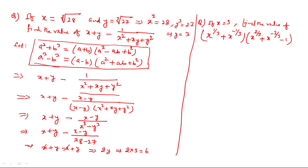By careful observation, x to the power 1/3 plus x to the power minus 1/3 is of the form a plus b. Then x to the power 2/3 indicates that x to the power 1/3 has been squared, and x to the power minus 2/3 indicates x to the power minus 1/3 has been squared. So this expression fits the formula a plus b times a squared minus ab plus b squared.